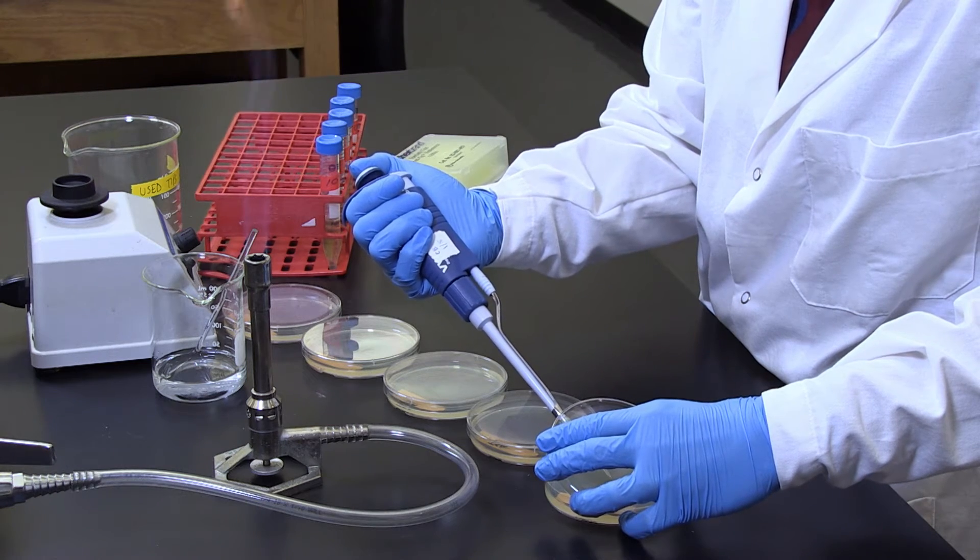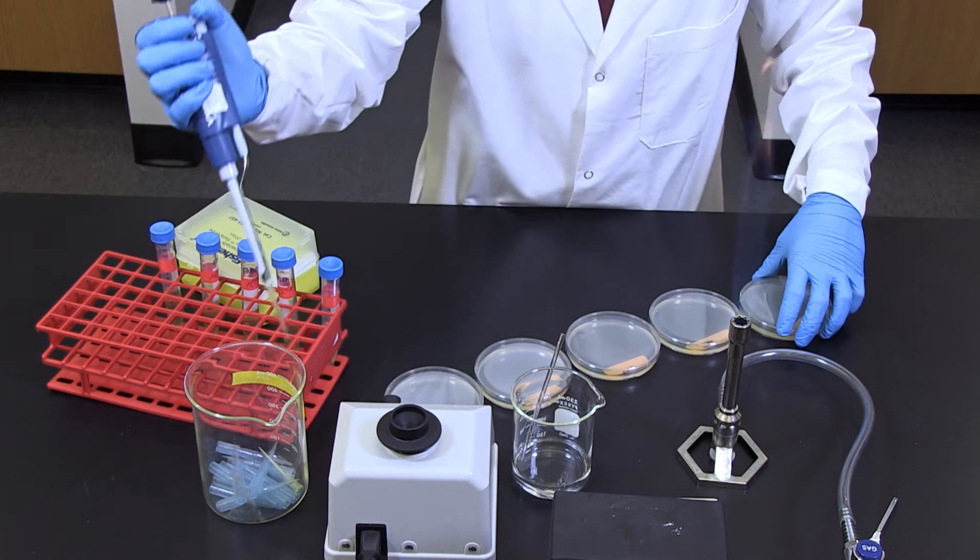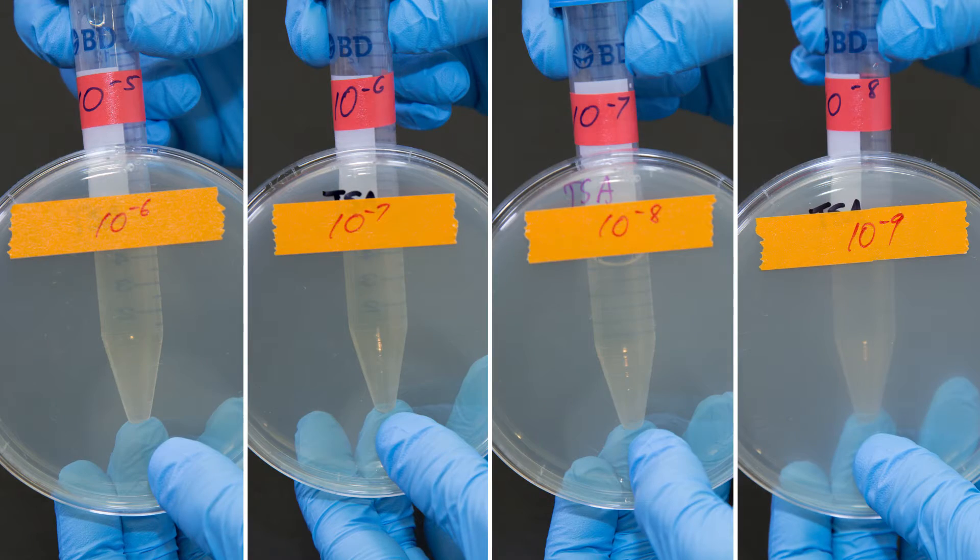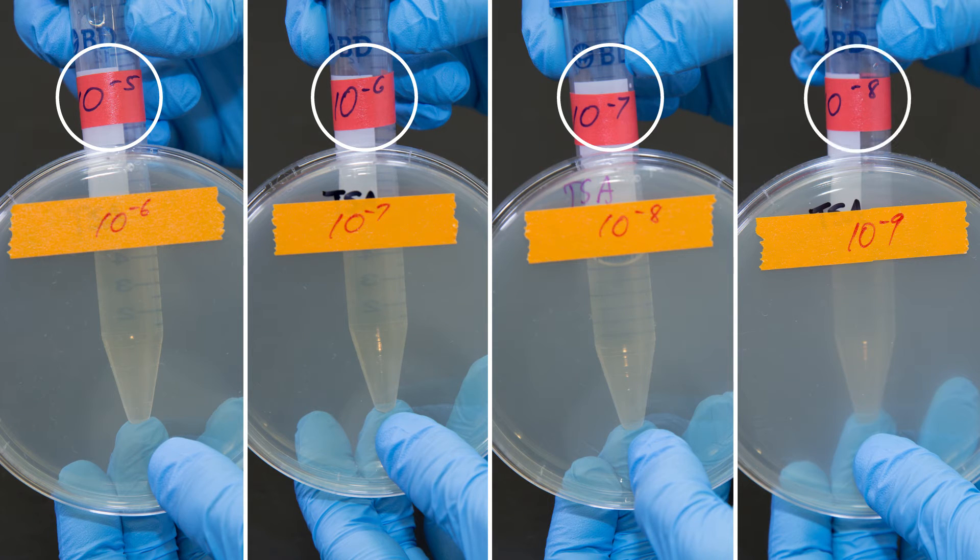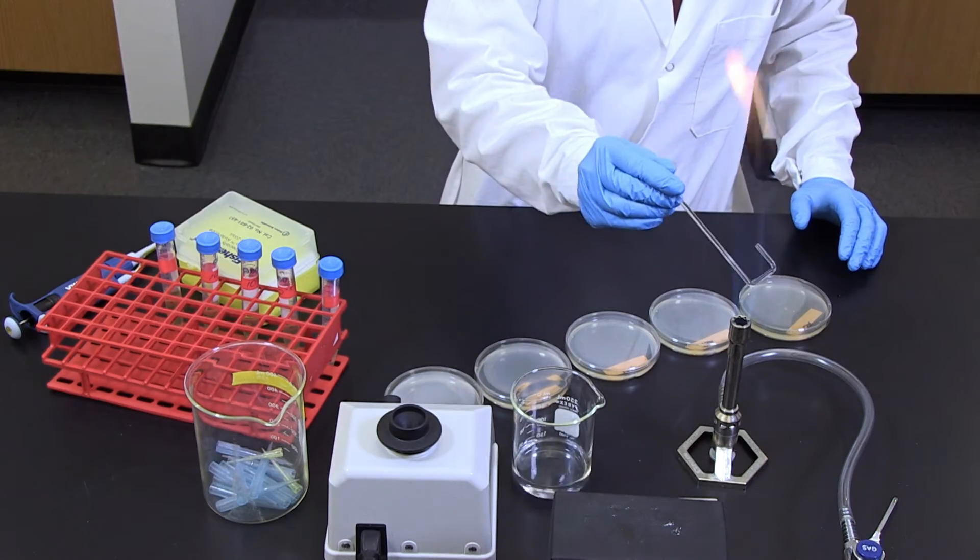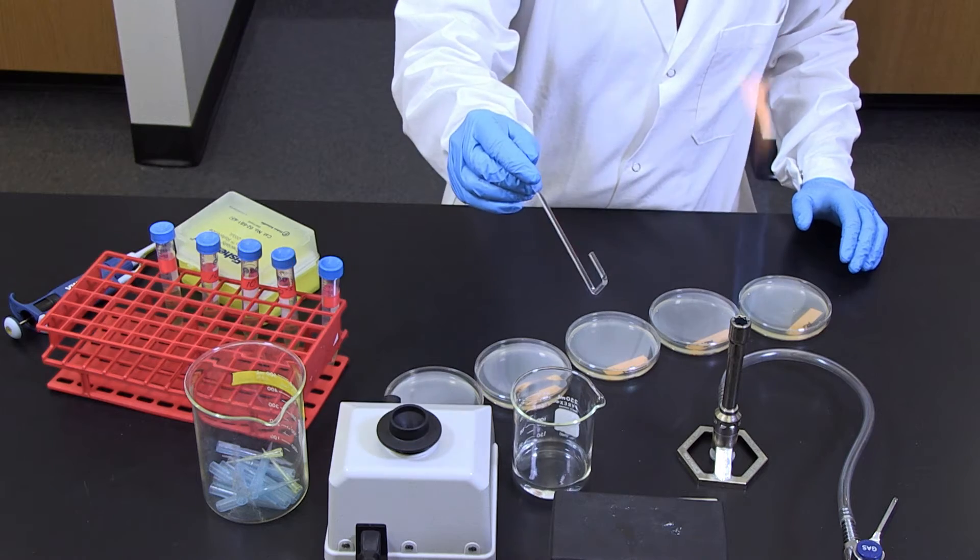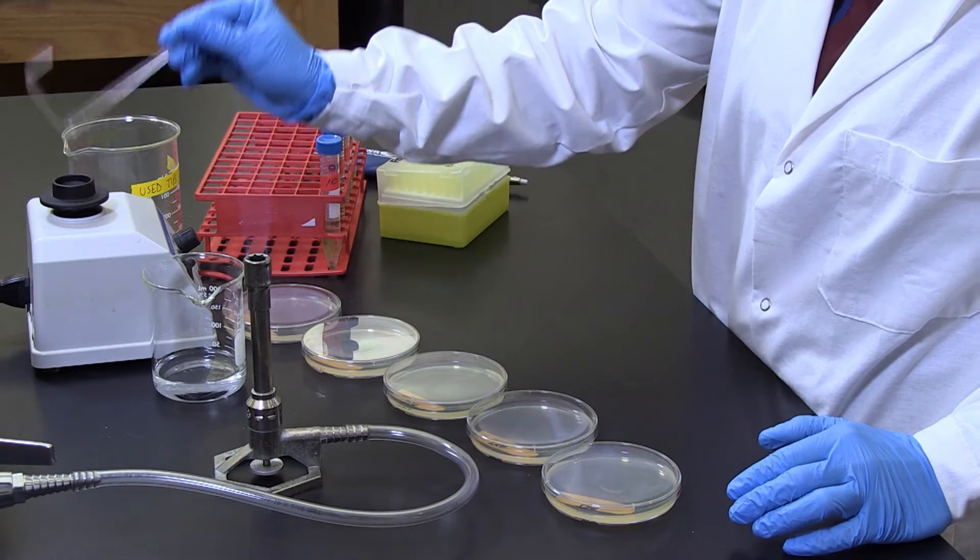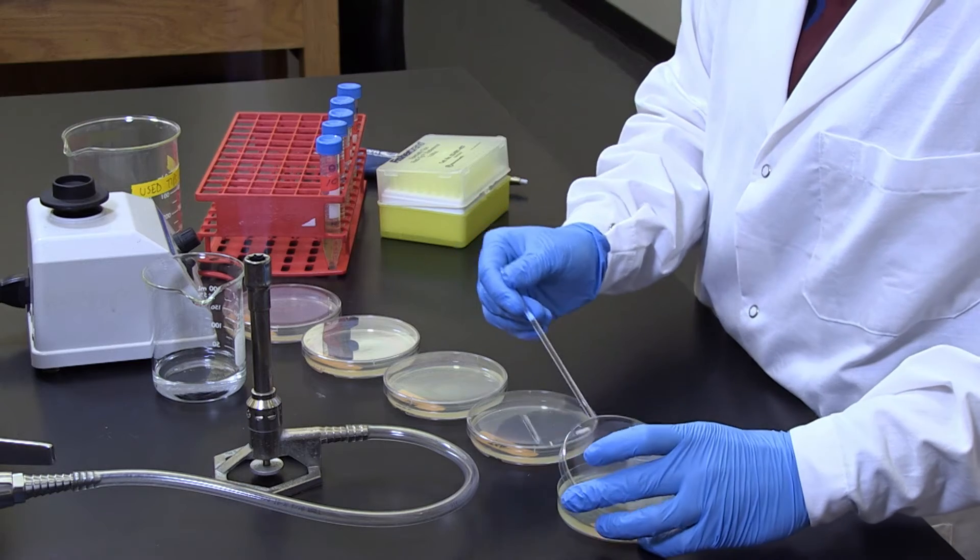Change the pipette tip and continue to transfer 0.1 milliliter of the diluted samples from ten negative five, ten negative six, ten negative seven, and ten negative eight test tubes to the agar plates labeled ten negative six, ten negative seven, ten negative eight, and ten negative nine, respectively. Apply aseptic technique to spread the bacterial diluted aliquot evenly on the entire surface of each of the agar plates just prepared using a sterilized cell spreader.